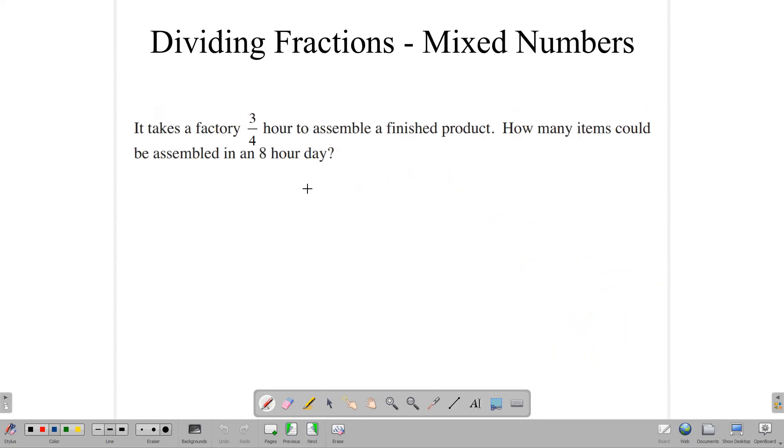Let's try that again with a different question. It takes a factory 3 quarters of an hour to assemble a finished product. How many items could be assembled in an 8-hour day? So, we have 8 hours, and we want to see how many 3 quarters we can get out of it.